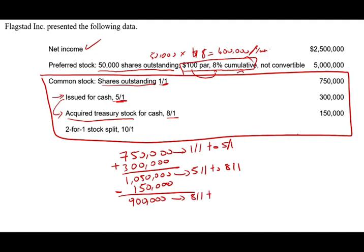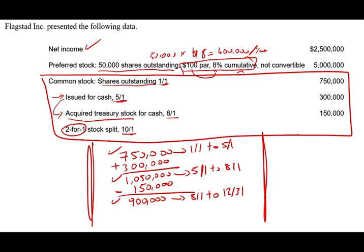We had 900,000 shares from August 1st onward. On October 1st, we had a 2-for-1 stock split. Every time we have a stock split or stock dividend, it applies to everything — it applies as of the beginning of the year. So the 2-for-1 stock split adjustment must be applied retroactively to all periods. Let's go ahead and move to the Excel sheet where I will show you the computation with the stock split adjustment and the weighted average shares.